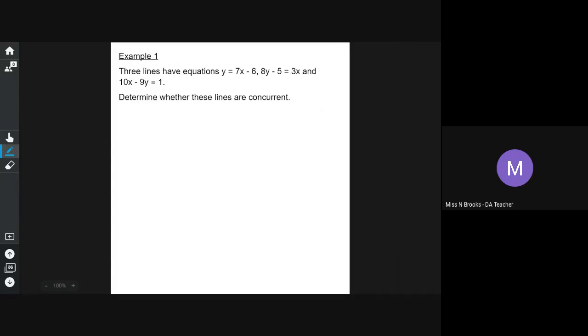So we've got y equals 7x minus 6. And we want to rearrange that so that both of our variables are on the left-hand side. So we're going to get y minus 7x equals negative 6.